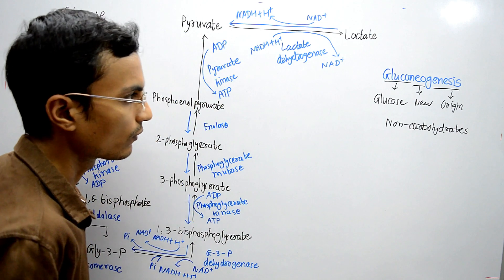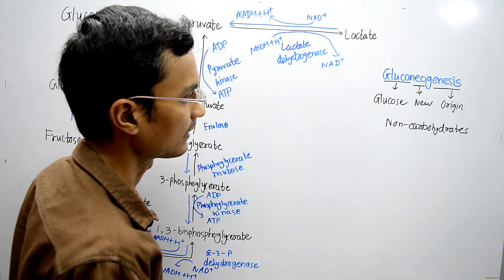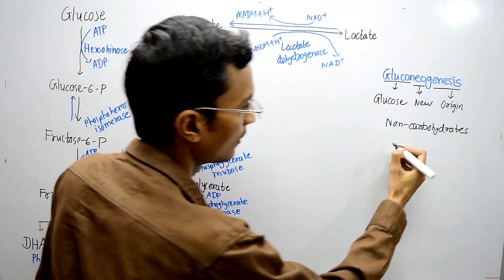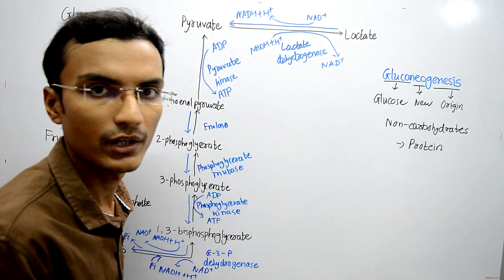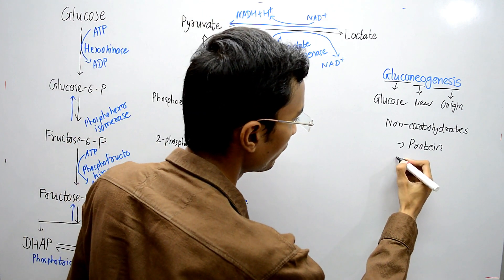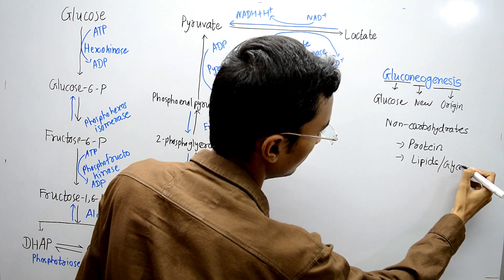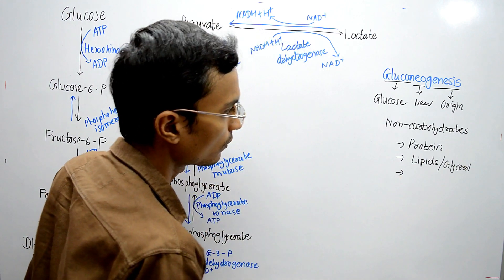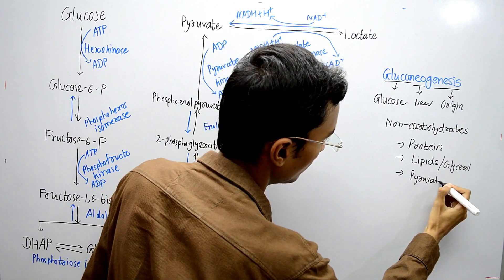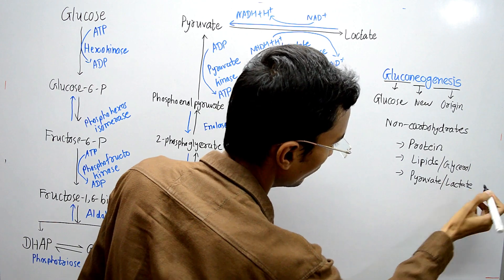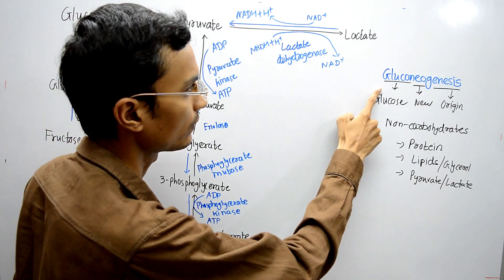The production of glucose from a non-carbohydrate source is known as gluconeogenesis. These non-carbohydrate sources include proteins — several glucogenic amino acids can produce glucose — lipids and glycerol, as well as pyruvate and lactate, from which we can produce glucose through gluconeogenesis.